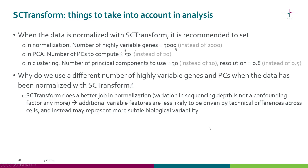As we already saw in normalization and finding highly variable genes, you can afford to go up to 3,000 instead of the usual 2,000. In the principal component analysis, you can compute more principal components. And in clustering, depending on your actual case, you might want to use a higher number of principal components and higher resolution.